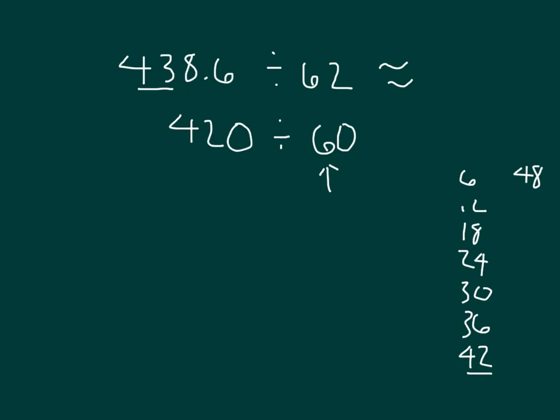420 divided by 60. That would be 420 divided by 6 divided by 10. We could do divided by 10 first and then divided by 6. 420 divided by 6, that's 7 tenths which is 70 divided by 10 which is 7. So 438 and 6 tenths divided by 62 is about 7.